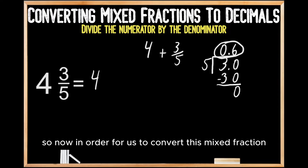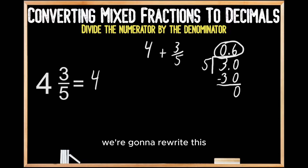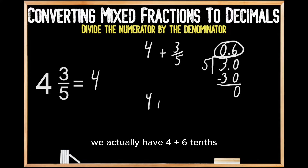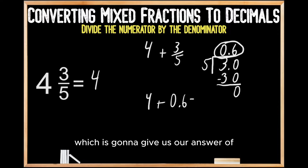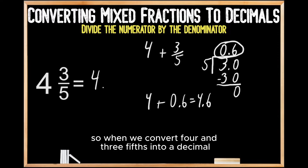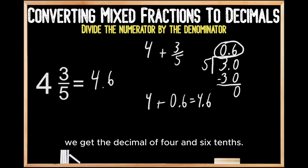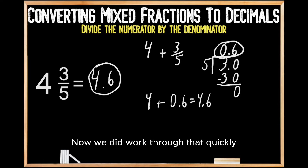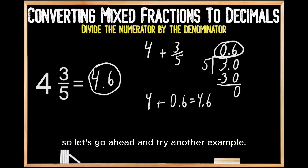So now in order to convert this mixed fraction into a decimal, we're going to rewrite this thinking: now we actually have 4 plus 6 tenths, which gives us our answer of 4 and 6 tenths. So when we convert 4 and 3 fifths into a decimal, we get the decimal of 4 and 6 tenths. Now we did work through that quickly, so let's go ahead and try another example.